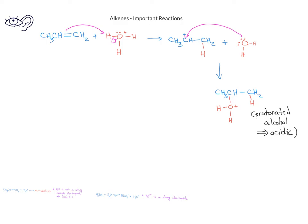If we have another water molecule present, one of the lone pairs on the oxygen in the water can be donated to form a bond to one of the hydrogens on the protonated alcohol, and that bonding pair between the hydrogen and oxygen can be donated to the oxygen, and the product we get is going to be an alcohol.